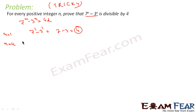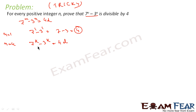For n equal to k, let's assume that this is true. That means 7 to the power k minus 3 to the power k equals 4d. Let's assume this is true — we'll call this equation 1.